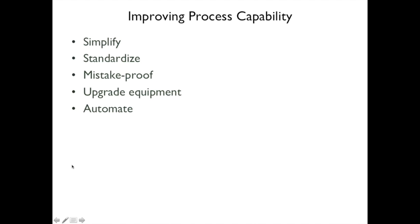Improving process capability involves simplifying the process, standardizing the process, and mistake-proofing the process — for example, designing parts so the wrong piece physically cannot be inserted because it won't fit. You can also upgrade equipment and automate the process.